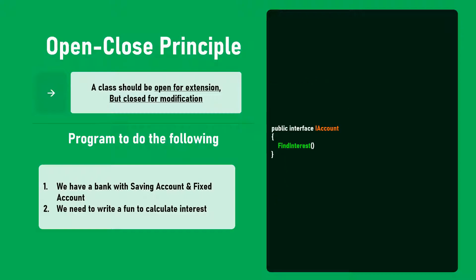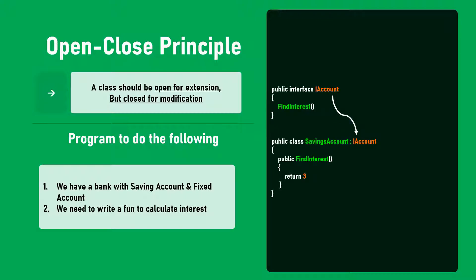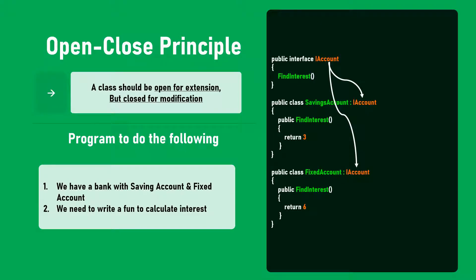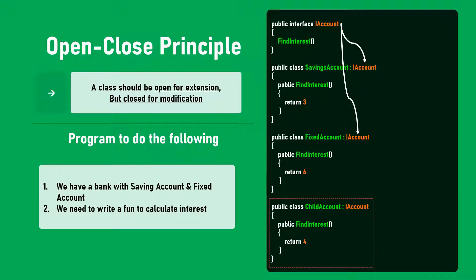A good programmer will first create an interface IAccount containing a findInterest method. Then he will create a separate SavingsAccount class implementing IAccount, returning 3%, and a FixedAccount class implementing IAccount, returning 6%. If the bank later decides to create a ChildAccount, it simply creates a new class implementing IAccount and returns 4%. We are not modifying the existing classes — we are extending them. This is what the Open-Close Principle states.